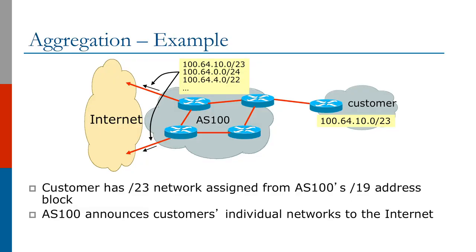So what happens if aggregation is not properly done on the internet? We will now show you an example of what happens if aggregates are not properly announced. As you can see on the screen, a customer has been assigned a slash 23 network from AS100's slash 19 address block. You see that only AS100 announces the customer's individual networks to the internet and not its aggregate.